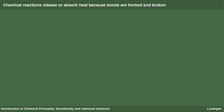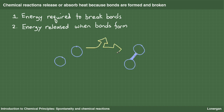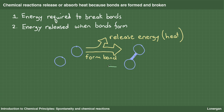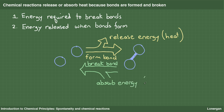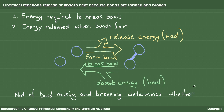Why does a chemical reaction release or absorb heat? A major part of the answer is that bonds are made or broken. Energy is required to break bonds, and energy is released when bonds are made. If two atoms come together to make a bond, energy will be released as heat. If the bond between two atoms is broken, energy will be absorbed as heat from the surroundings. The net difference between the overall energy released when making bonds and the energy needed to break bonds largely determines whether the reaction releases or absorbs heat.